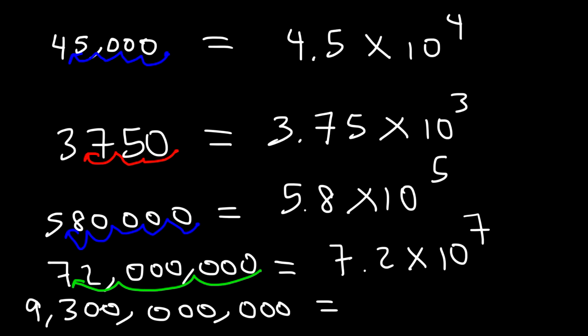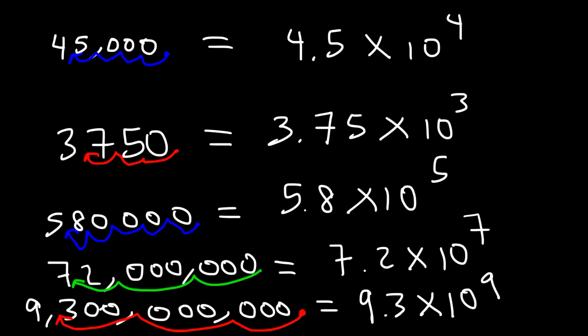For the last one — 9.3 billion — I move the decimal 9 units to the left. So this is going to be 9.3 times 10 to the 9th power. And that's a simple way to express very large numbers using scientific notation.